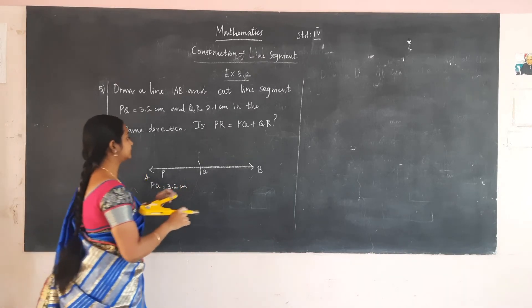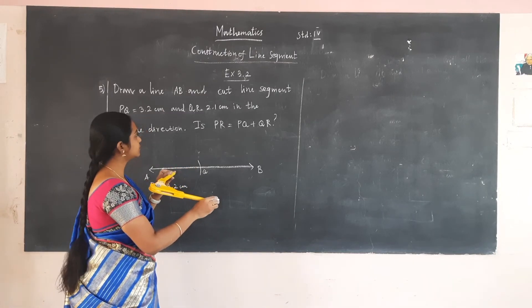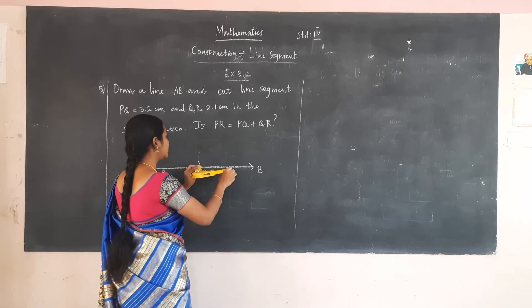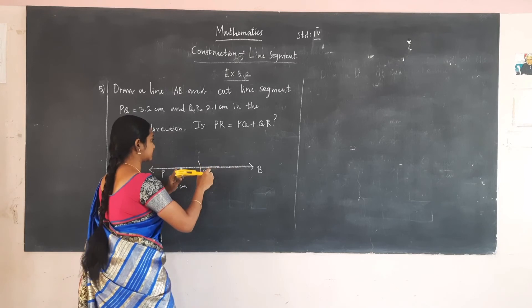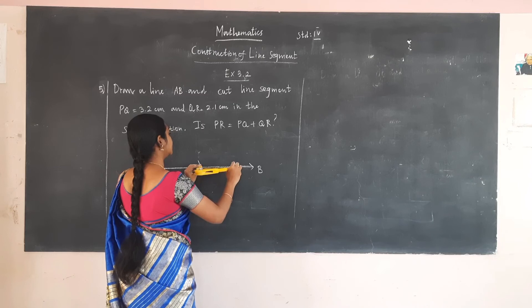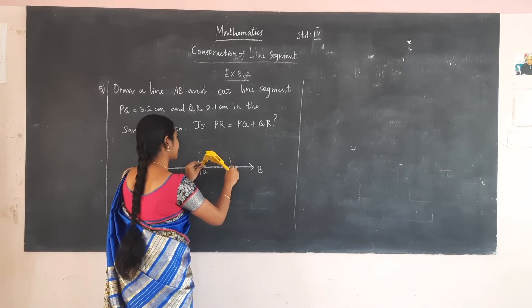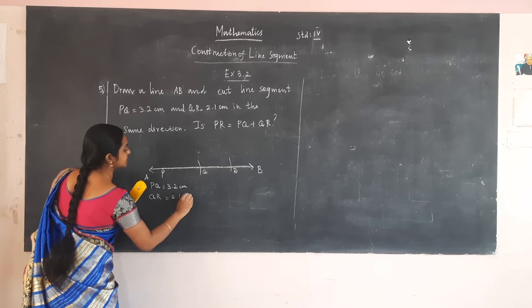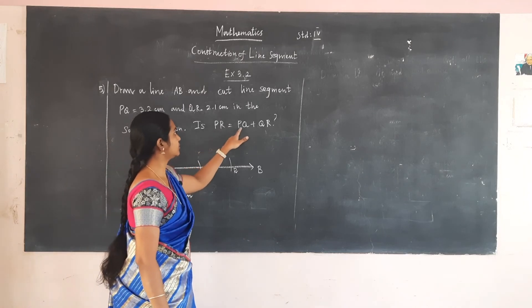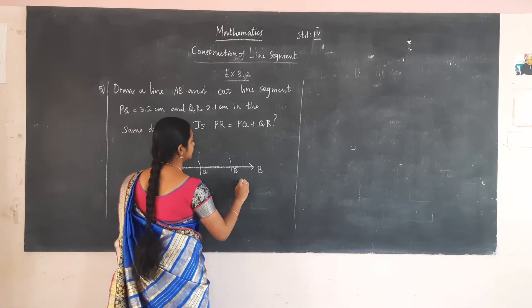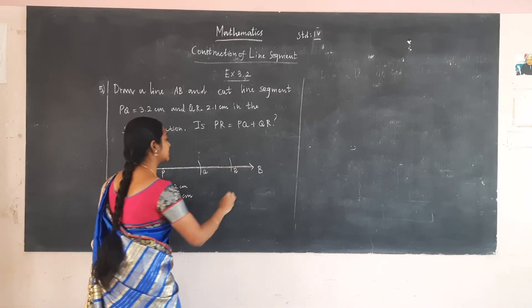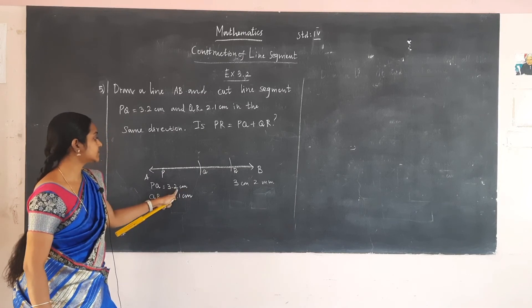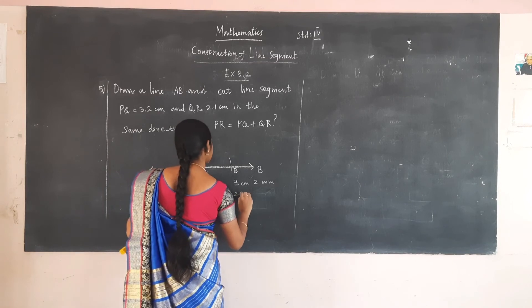PQ equals 3.2 cm. Next, draw QR. Place the sharp point on 0 and move towards the right until we reach 2.1 cm. Without changing, keep that on Q and draw an arc. QR is given as 2.1 cm. PQ is 3 cm 2 mm and QR is 2 cm 1 mm.